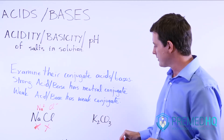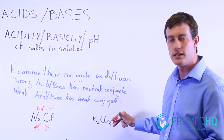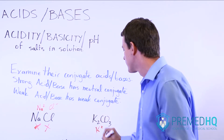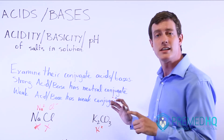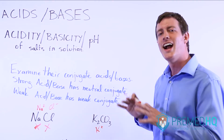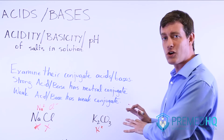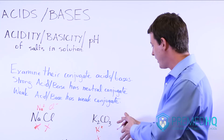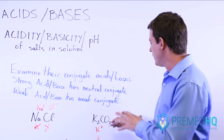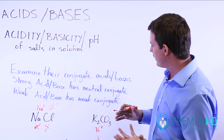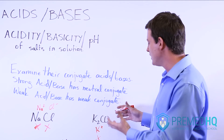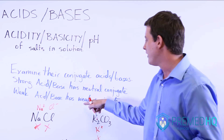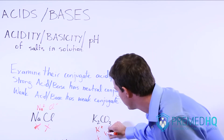Now let's look at potassium carbonate, K₂CO₃. It yields two K⁺ ions, and K⁺ is the conjugate acid of KOH, potassium hydroxide, which is one of the strong bases. Because KOH is a strong base, K⁺ will not be useful as an acid — it will be completely neutral. On the other hand, CO₃²⁻ is the conjugate base of HCO₃⁻, which is not a strong acid. Because bicarbonate is a weak acid, it will have a weak conjugate base, so CO₃²⁻ will be slightly basic.